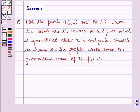Plot points A(3,2) and B(2,4). These two points are the vertices of a figure which is symmetrical about x=2 and y=2. Complete the figure on the graph, write down the geometrical name of the figure.